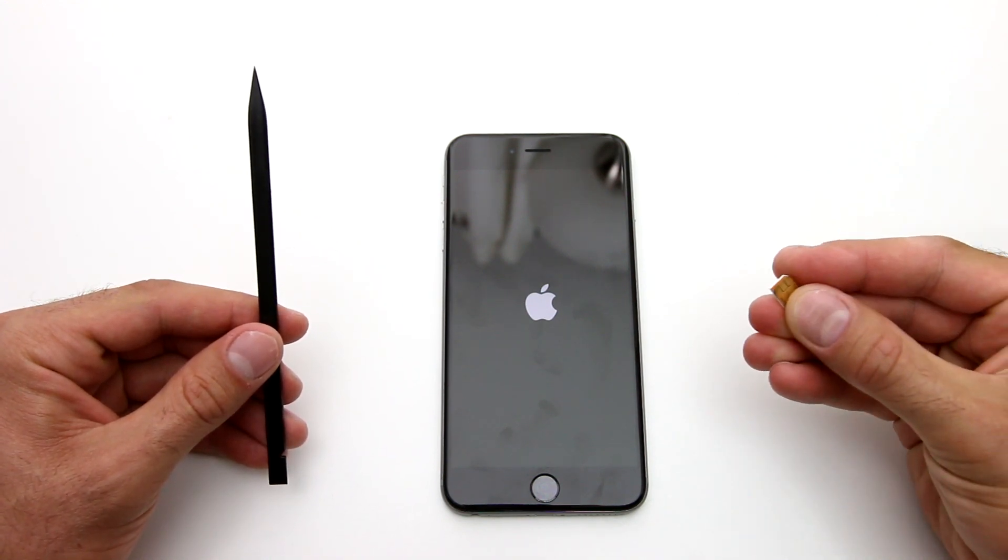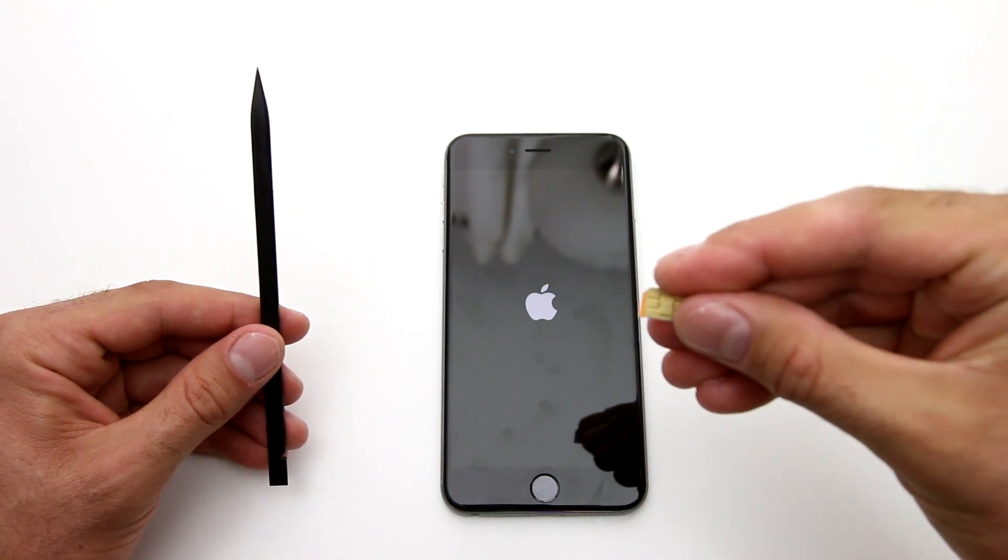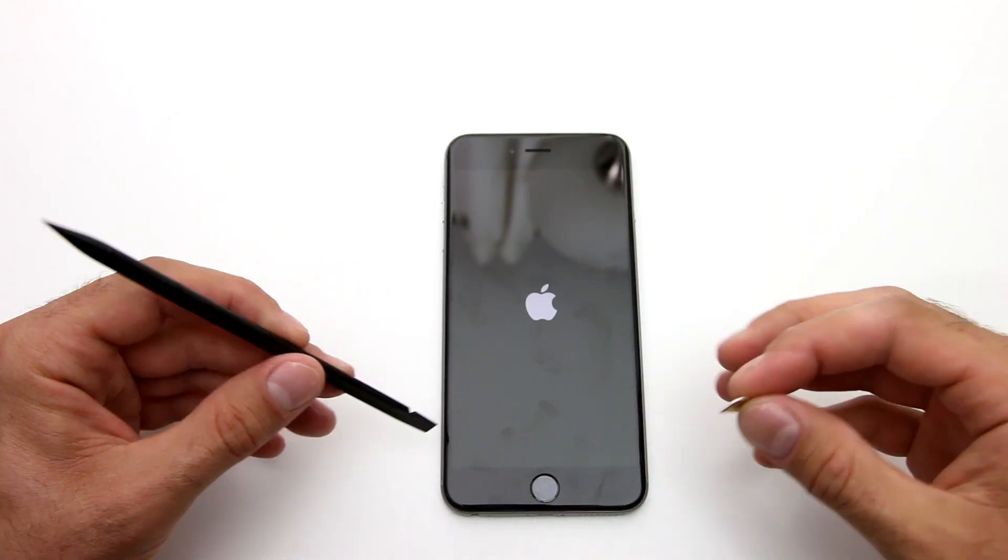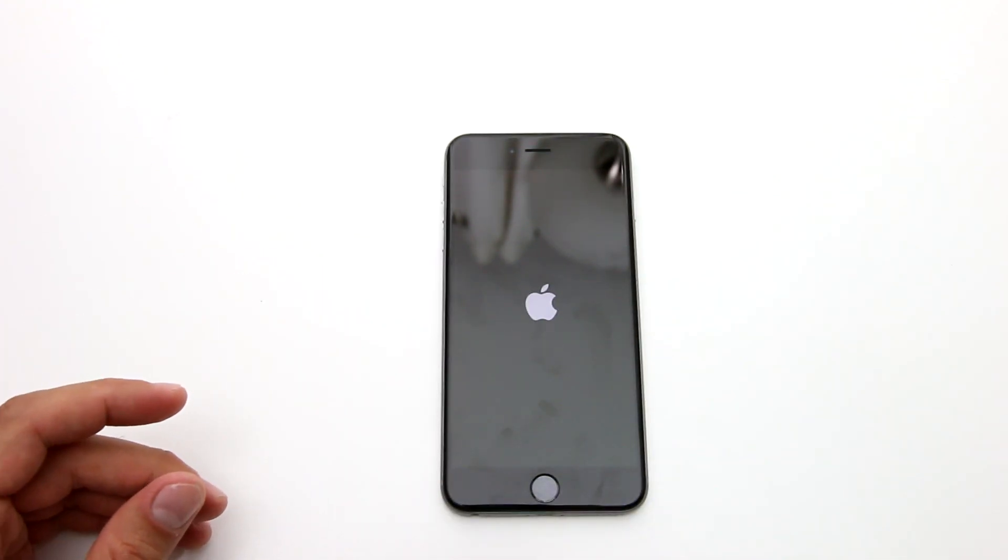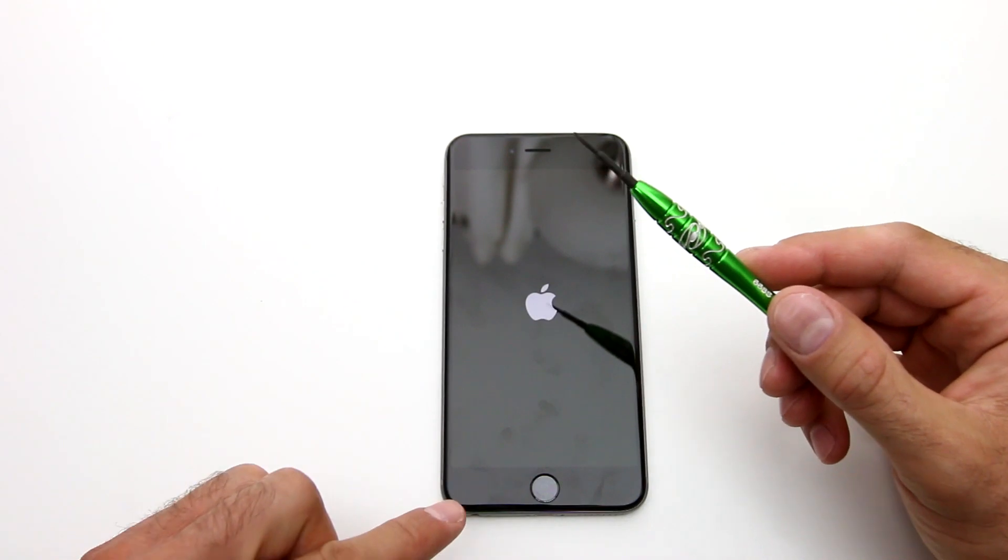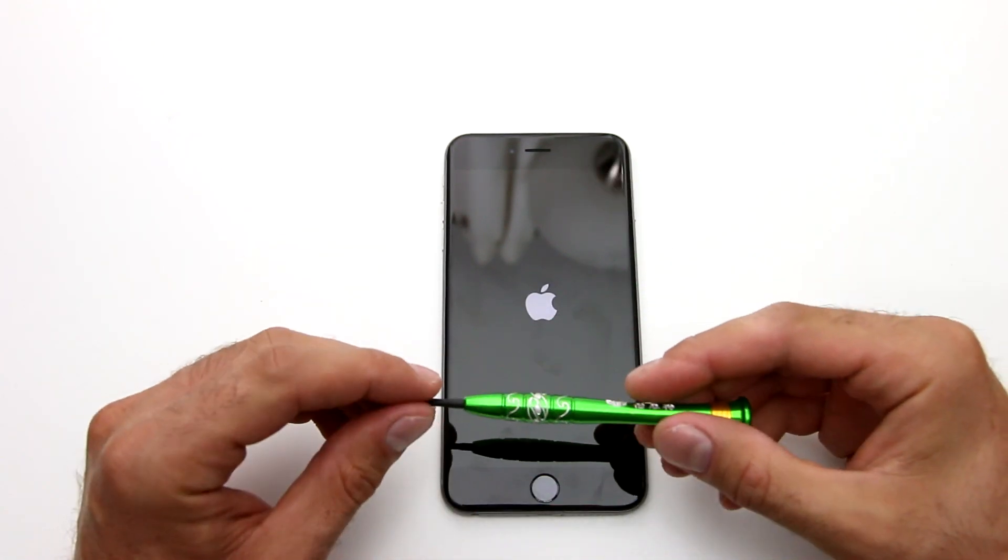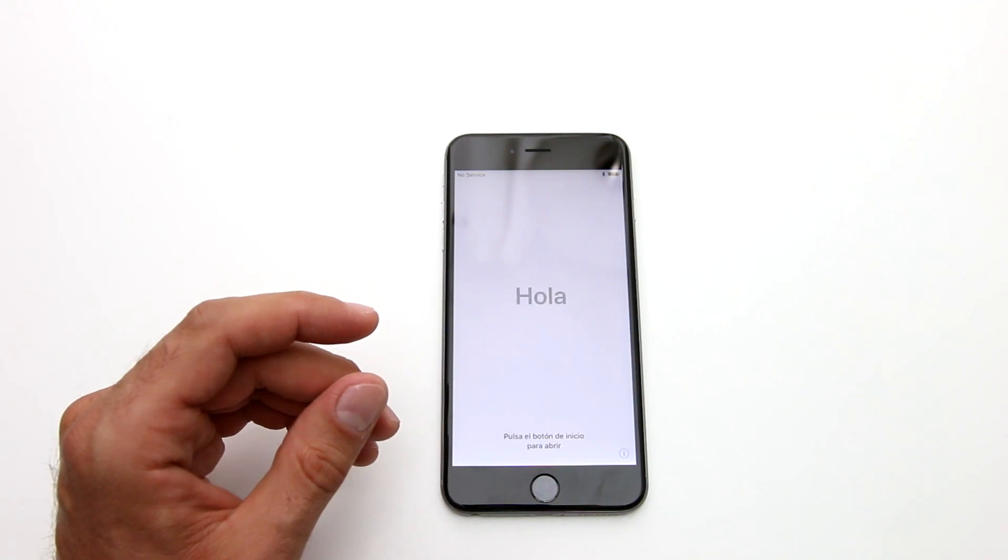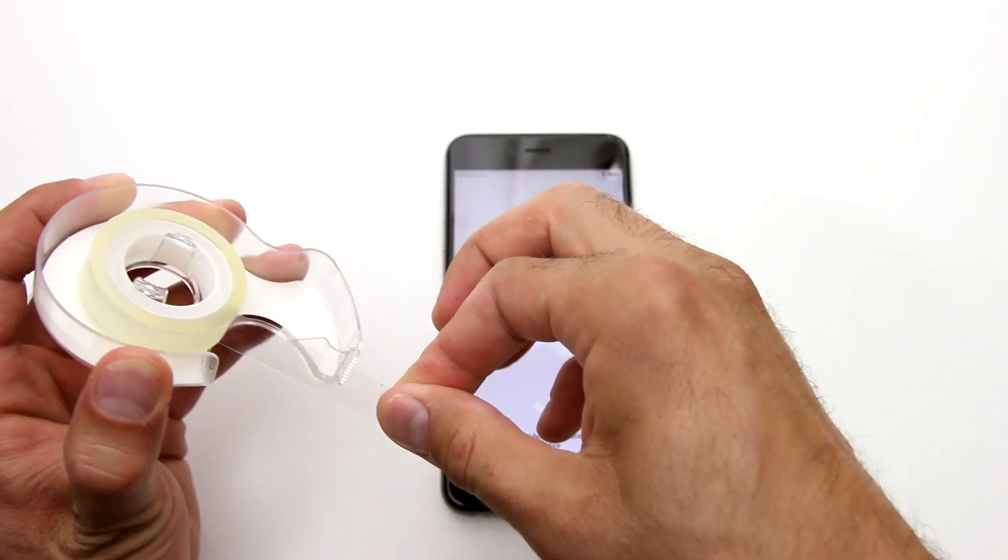You need a plastic pry tool, you need a micro SIM card that's going to go between the metal plate and the flex cables, and you obviously need a couple of screwdrivers. You need the smallest pentalobe screwdriver that's available in the set to remove these two screws on the bottom and you will also need another screwdriver that's going to be just a regular very small Phillips.